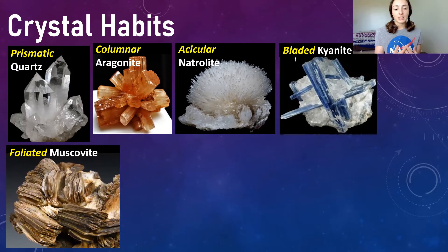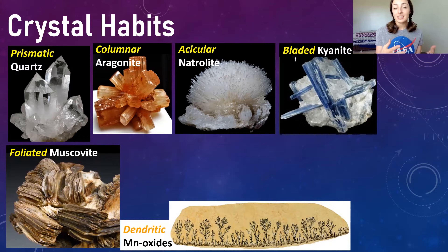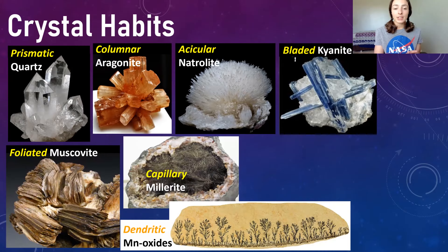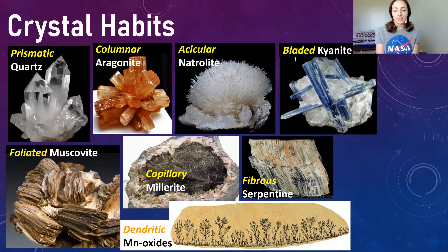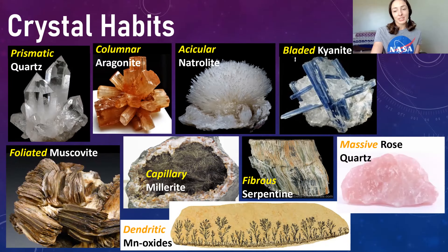Then we have foliated crystal habits shown here in muscovite — basically these are like sheet or plate-like structures, and in terms of muscovite they kind of look like stacks of paper. Then we have dendritic crystal habits, a typical pattern seen in manganese oxides, called dendritic because it's tree-like. Then we have capillary or hair-like crystal habits — here we have millerite within a geode with that hair-like habit. Then we have fibrous crystal habits seen in serpentine, and of course massive structureless minerals seen in certain types of quartz.